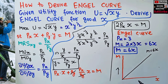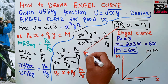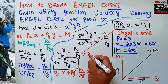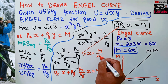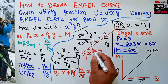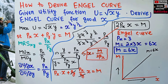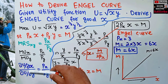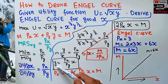As income increases, quantity demanded of good x also increases, so we can infer that good x is a normal good. We can also derive the demand function from the Engel curve: solving for x gives x = m/(2·Px). This is the demand function for good x. You can also follow the same steps to derive the Engel curve for good y.